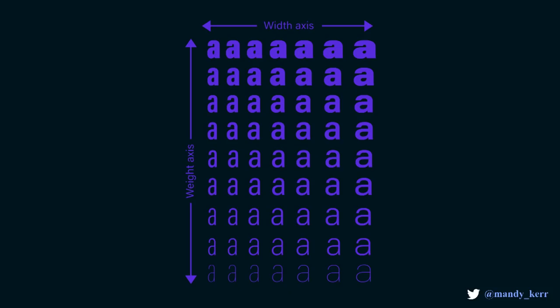As you can see in the image, the interpolation doesn't just apply to a single axis at a time, it applies to all of the combinations as well. So you can have a wide, bold font, or a narrow, thin font. And because of the way that these fonts are made with the interpolation, they typically result in smaller file sizes.